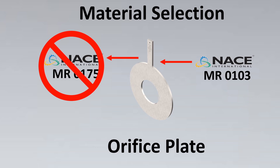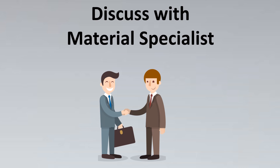Why? Because MR0103 was especially created for the refining environment, where certain materials and special issues of sulfide stress cracking were taken into consideration. For such cases, we must discuss with a material specialist and only then approve — for cases involving materials and similar critical items. However, for simple cases like paint specifications, we can go ahead with MR0175.